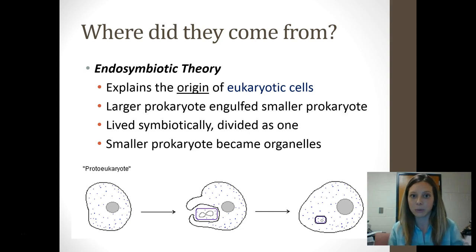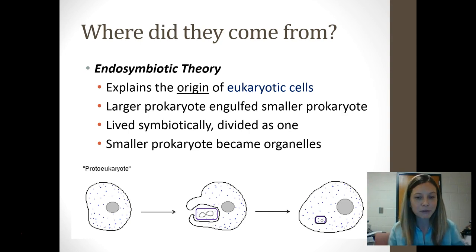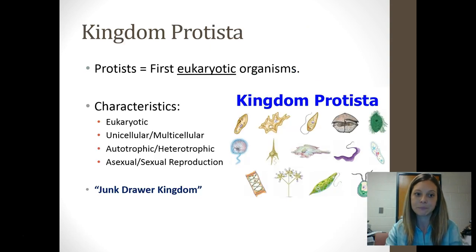There's a lot of evidence that supports this, but one of the major pieces of evidence is that mitochondria and chloroplasts have their own DNA separate from the DNA you would find in a nucleus. So those organelles must have been their own independent living organisms at one point in time.